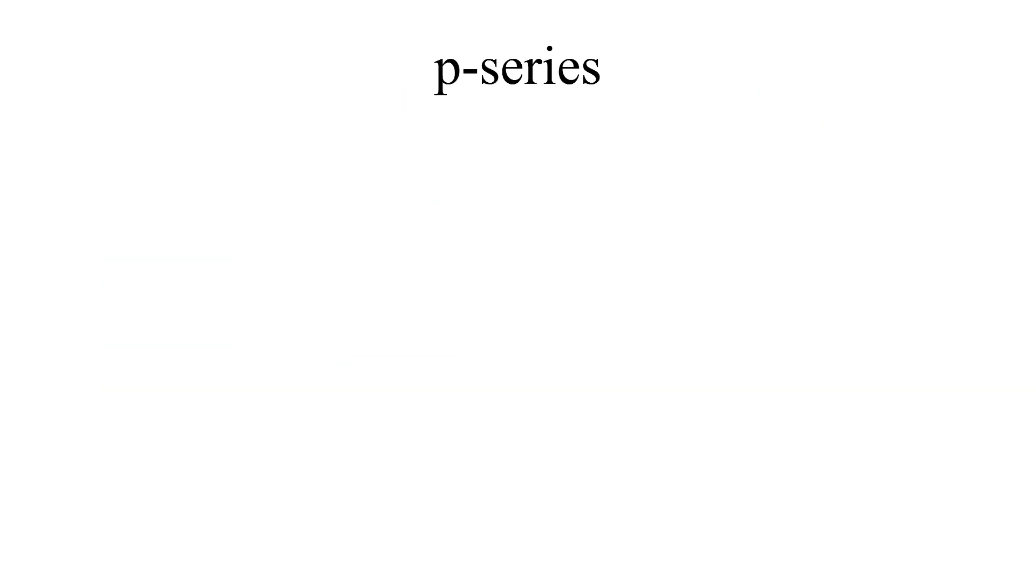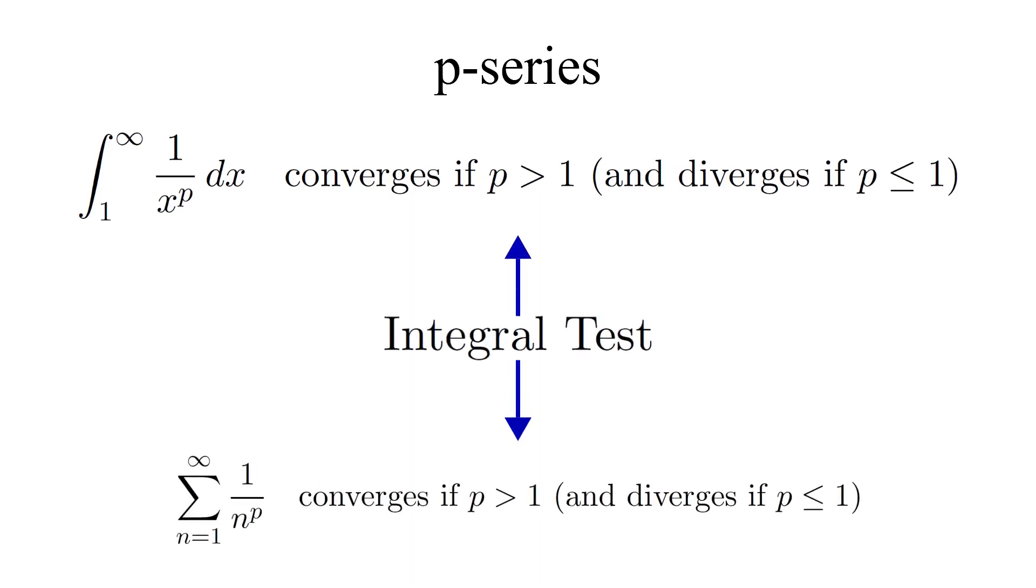Now before jumping into the examples, I need to tell you about one other little fact that is useful throughout the section. Recall that the integral from 1 to infinity of 1 over x to the p dx converges if and only if p is strictly greater than 1 and diverges if p is less than or equal to 1. Well by the integral test an analogous fact for series also holds. The series sigma sum from n equals 1 to infinity of 1 over n to the power p converges if and only if p is strictly greater than 1 and diverges otherwise. We'll be making use of this fact quite often in the examples.